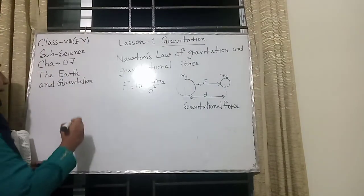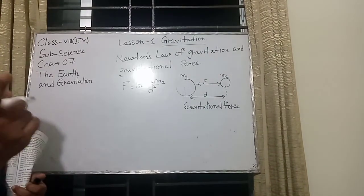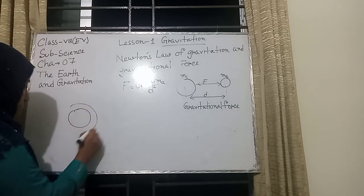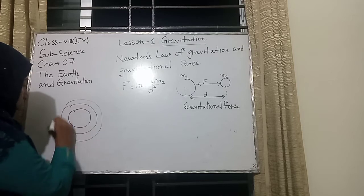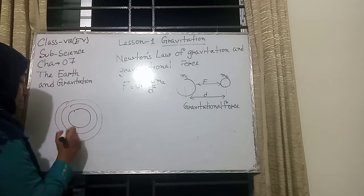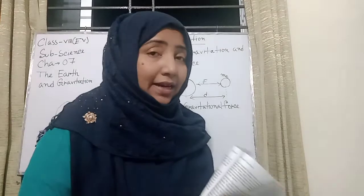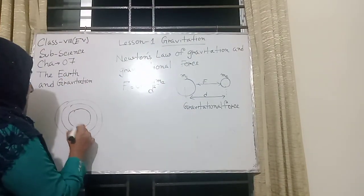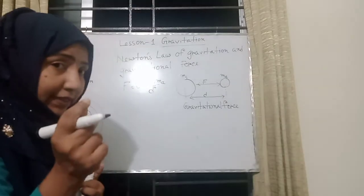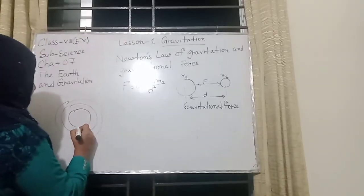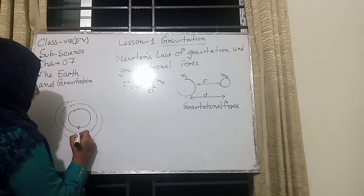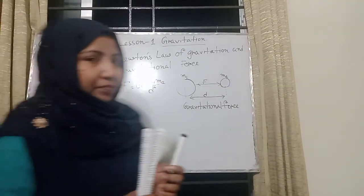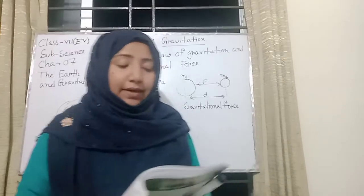We also explain here the solar system. There are many orbits — first is Mars, second is the Earth, third is Jupiter, etc. They also attract each other. This is also called gravitation. Newton's law of gravitation and the gravitational force — please everyone underline. It is also a very, very important topic for your exam.